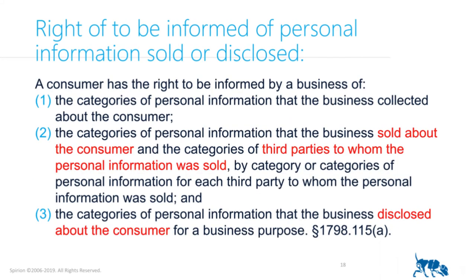Right to be informed about information sold or disclosed: you have the right to be informed about information collected about you, the categories of personal information that was sold and the third parties to whom it was sold. Also, if you as a business disclosed information about the consumer for a business purpose — even if you're not selling it — you have to disclose that as well. So there are three different areas where you have to inform people about personal information and to whom it was sold or disclosed. It's more or less akin to what we have in GDPR.